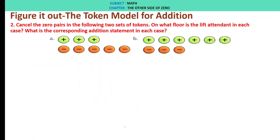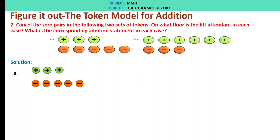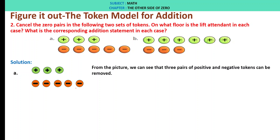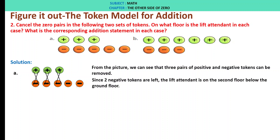Figure it out: the token model for addition. Cancel the zero pairs in the following two sets of tokens. What floor is the lift attendant in each case, and what is the corresponding addition statement? A: plus 3 and minus 5. From the picture we can see that 3 pairs of positive-negative tokens can be removed. Since only 2 negative tokens are left, the lift attendant is on the second floor below the ground floor. Therefore, the addition statement is plus 3 plus minus 5 is minus 2.